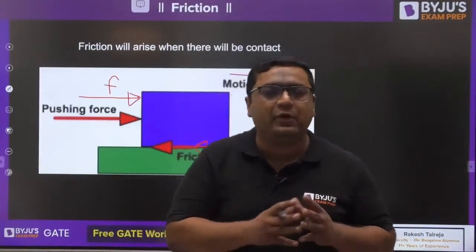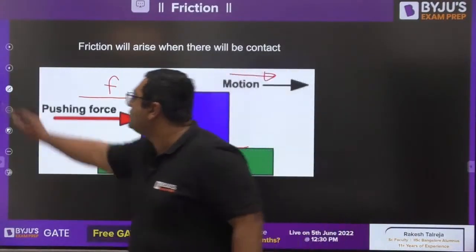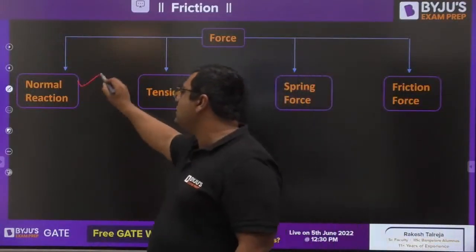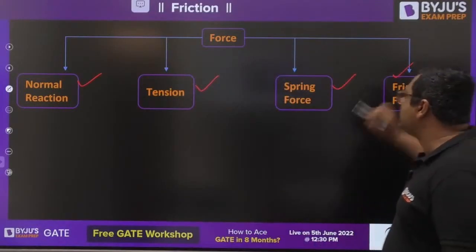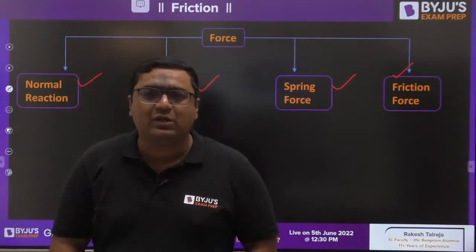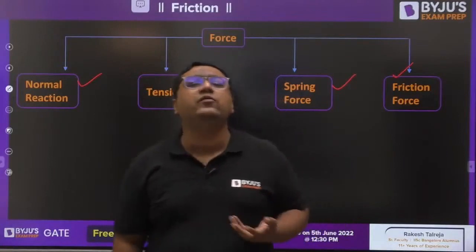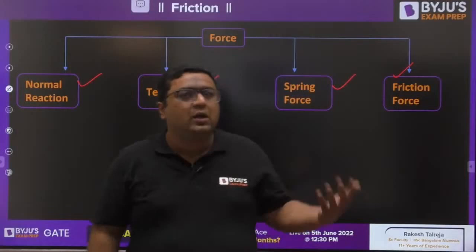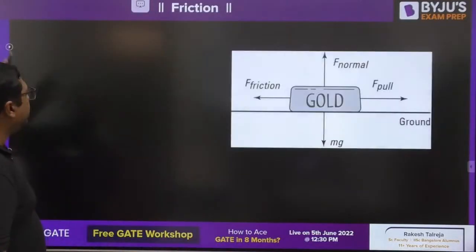We got to know friction force comes because of some kind of contact, so friction is a contact force. Normal reaction is a contact force, tension is a contact force, spring force is a contact force, and friction is a contact force. Both normal reaction and friction come because of contact between two surfaces. The horizontal component is friction and the vertical component is normal reaction.